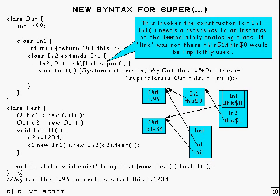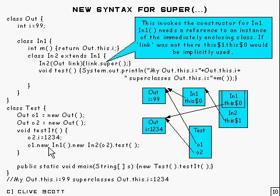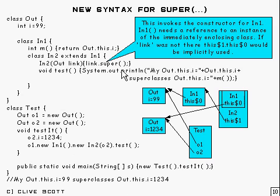Here's `test` which tests the thing. `test` has got two references to `out`. It sets `i` in the second reference to 1234, so that's 1234 now. The first one is going to be left at 99. It takes the one at 99 and constructs `in1`, then constructs `in2` passing in the second `out` reference — so `in2`'s superclass `in1` now has its enclosing instance referring not to the 99 one but to the 1234 one.